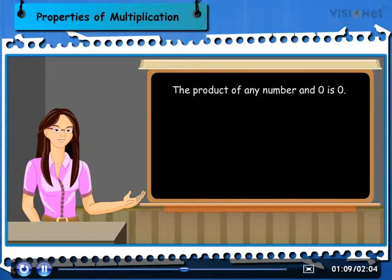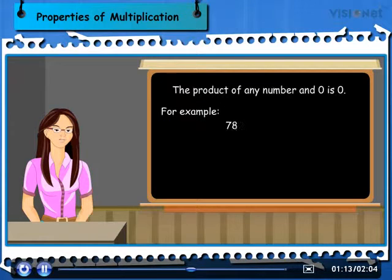Third is that the product of any number and 0 is 0. For example, 785 × 0 is equal to 0. These are the properties you have already known.